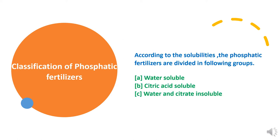Classification of Phosphatic Fertilizers: On the basis of solubility, Phosphatic fertilizers are classified in three groups. First is water soluble Phosphatic fertilizers. Second is citric acid soluble. And third is water and citrate insoluble fertilizers.